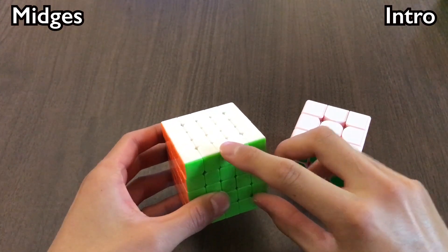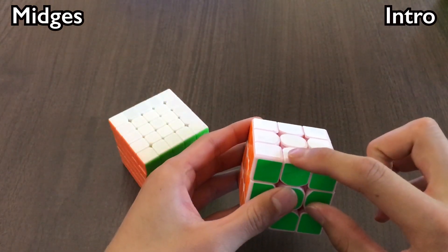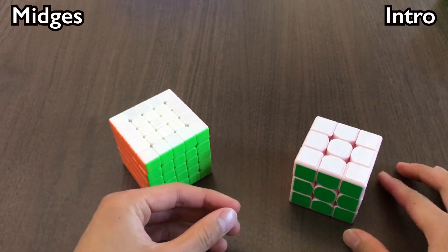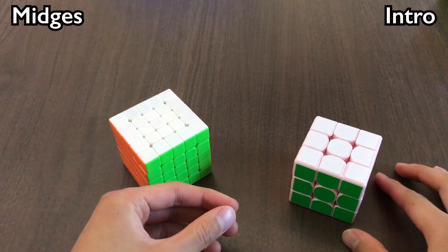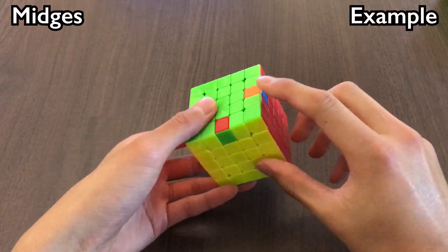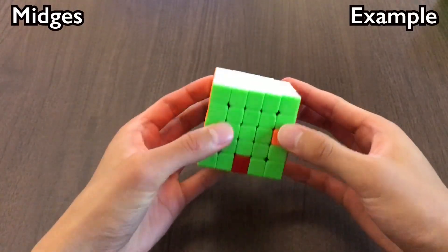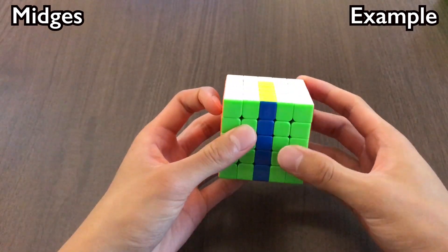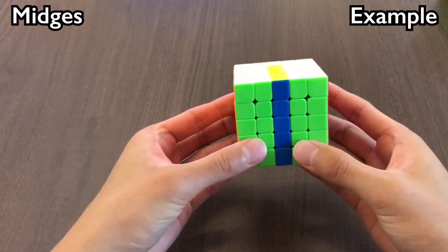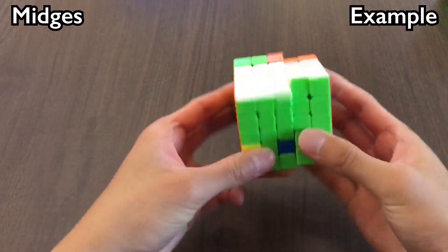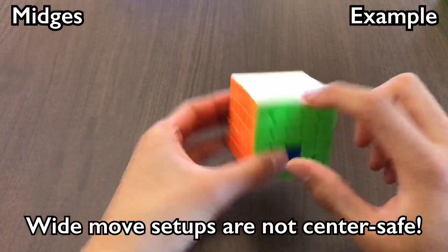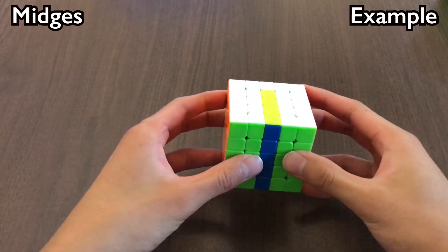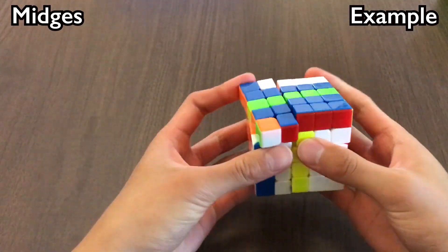Midges are these pieces on a 5x5, which are analogous to edges on a 3x3. We can solve midges with M2, similarly to the way we use M2 on 3-blind. For example, if we have J, H, we can do setup move, M2, undo setup move. Now for H, some of you may do the setup with wide moves, but that doesn't work on midges because it messes up the centers. Instead, we have to rotate and do the standard alg.